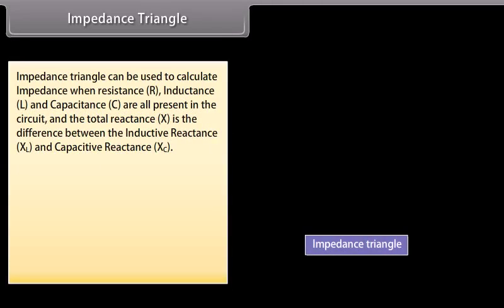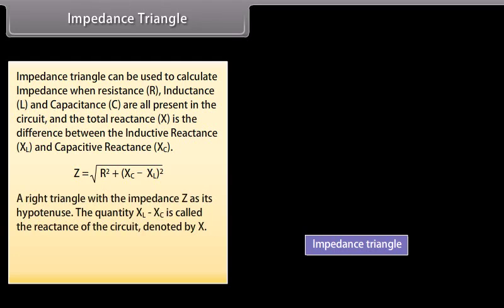Impedance triangle: The impedance triangle can be used to calculate impedance when resistance, inductance, and capacitance are all present in the circuit. The total reactance is the difference between inductive reactance and capacitive reactance. Z = √(R² + (Xc − XL)²). A right triangle with impedance Z as its hypotenuse. The quantity XL − XC is called the reactance of the circuit, denoted by X. tan(φ) = (Xc − XL) / R.